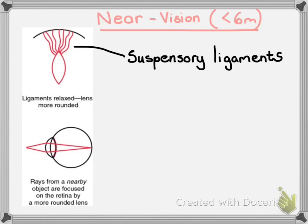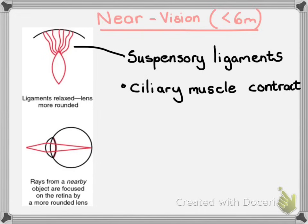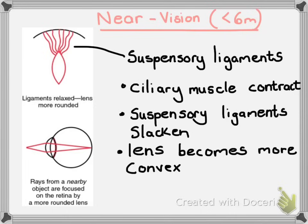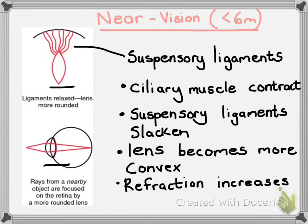When we explain this process, we go as follows. As the suspensory ligaments slacken, this causes the lens to become more convex, or to bulge more — you can see in the diagram that the lens has changed slightly. Because the lens has become thicker and fatter, you can refract more light, which means that you can see in more detail, especially when looking close up.